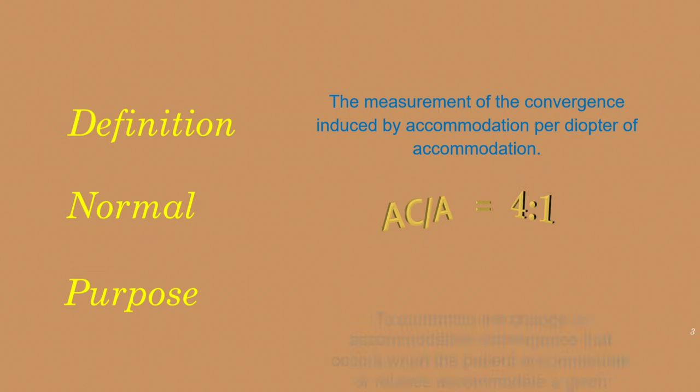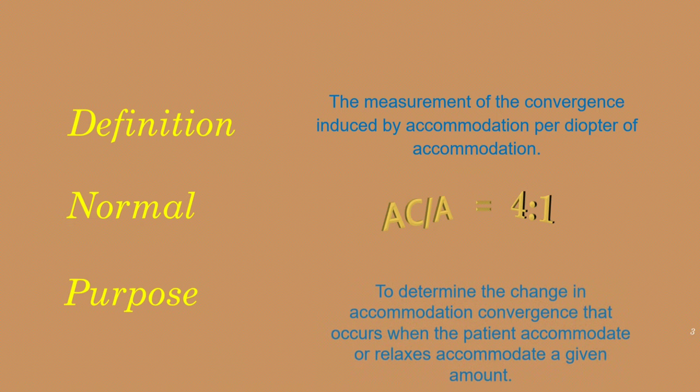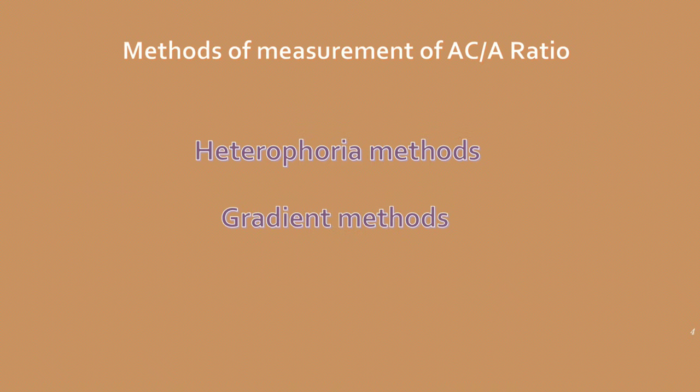Methods of measurement of AC/A ratio: first is the heterophoria method, and second is the gradient method. Let's begin with the heterophoria method. This heterophoria method is a very important method.